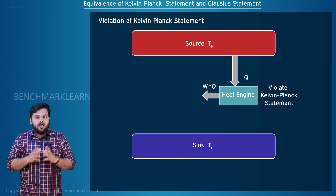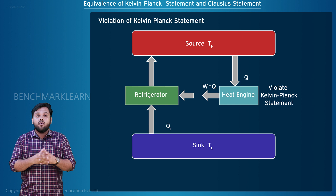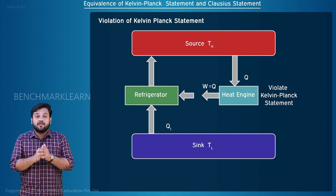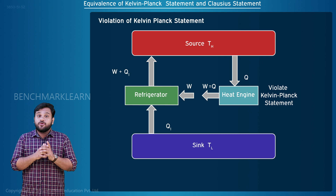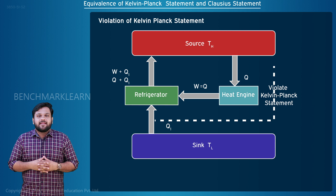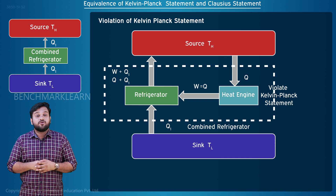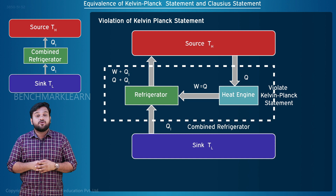Now consider a refrigerator that draws heat Q1 from the cold reservoir and supplies heat to the hot reservoir using work W. A heat of W plus Q1 — that is Q plus Q1 — will be supplied to the hot reservoir. Now combine the heat engine and the refrigerator. The work output W by the heat engine is supplied as the work needed by the refrigerator. We have a combined refrigerator transferring heat Q1 from the cold reservoir to the hot reservoir without consuming any work, which violates the Clausius Statement.